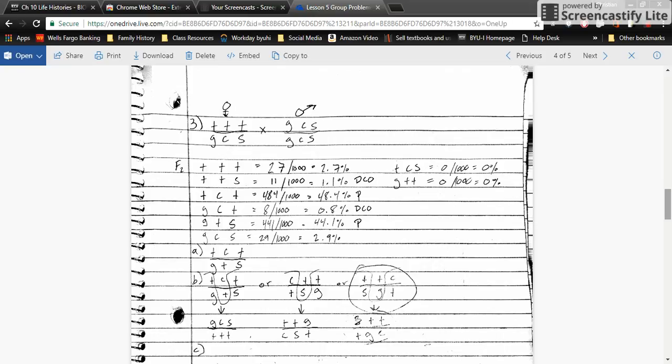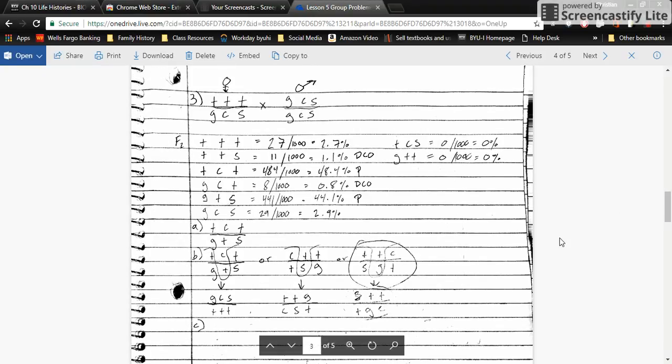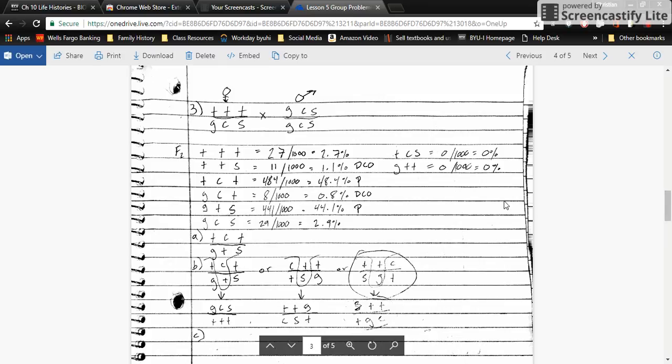Hey guys, this is Christian Sawyer. I'm going to be talking about problems three and four from the group problems. For problem three, we started off with, as always, the heterozygous and homozygous recessive individual. The heterozygous female has wild type alleles which are dominant, as well as the recessive alleles G, C, and S. The homozygous recessive male has two copies of G, two copies of C.